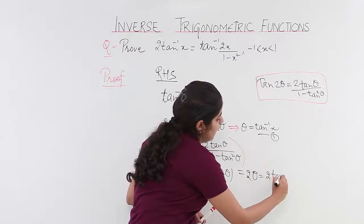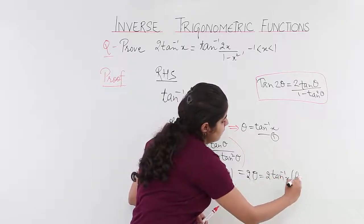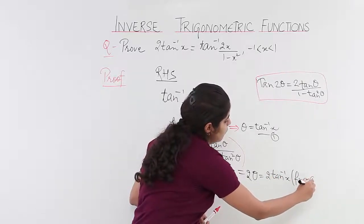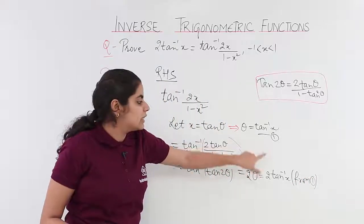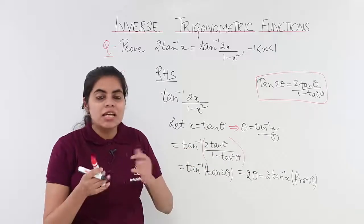So it is 2 tan inverse x. And in the bracket, we have to write - why are we substituting this? Because we have already assumed in equation 1 that theta is equal to tan inverse x. Now, 2 tan inverse x is what? It is basically the left hand side of the question.